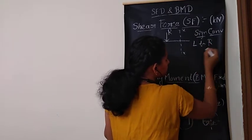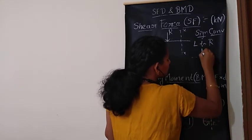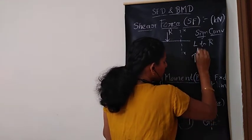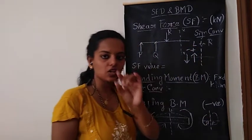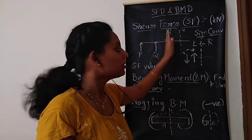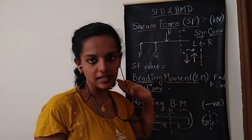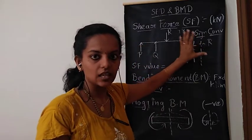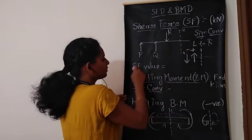In that case, from left to right, the upward will be positive and downward will be negative. Consider only one reference side — that is from left to right or right to left. If you are considering from left to right, consider always upward force as positive and downward force as negative. To avoid confusion, consider only one thing. Then, according to this sign convention, we will see what is the shear force value.